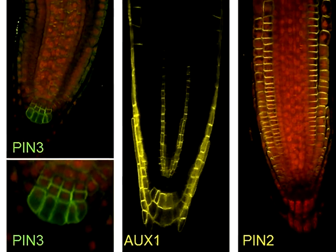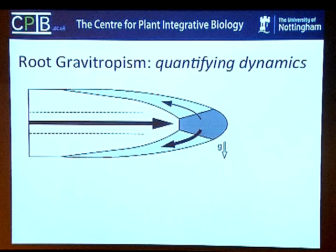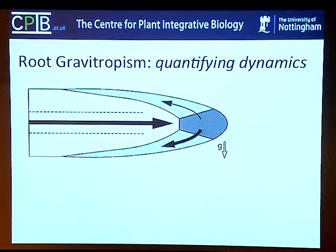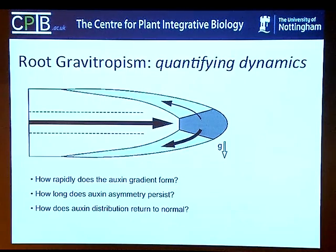One problem is that genetic studies have been incredibly powerful to identify key components of this process, but we have to realize their limitations. They provide essentially qualitative insights, but we lack information about quantitative insights and dynamics. Despite over 90 years since this mechanism was first described, we still don't know how rapidly the auxin gradient forms, how long the asymmetry persists, how auxin distribution returns to normal during bending, or what the dynamics of transcription are within this context.